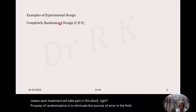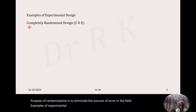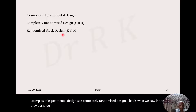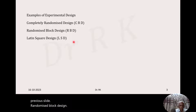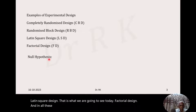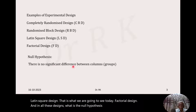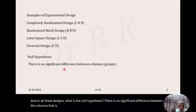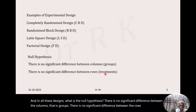Examples of experimental design: completely randomized design, which we saw in the previous slide; randomized block design; Latin square design, which is what we are going to see today; and factorial design. In all these designs, what is the null hypothesis? There is no significant difference between the columns, that is, groups. There is no significant difference between the rows, that is, treatments.